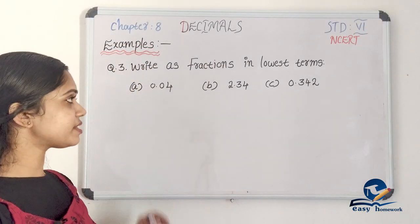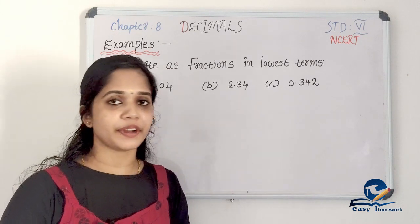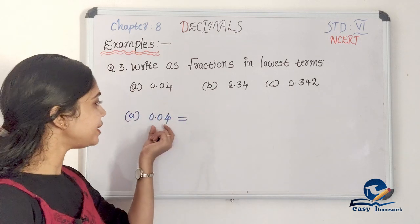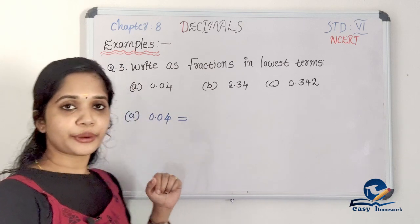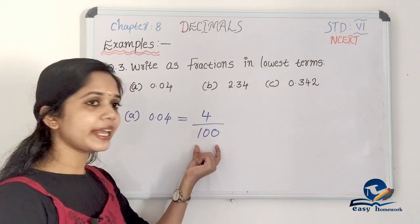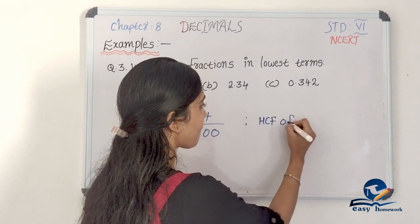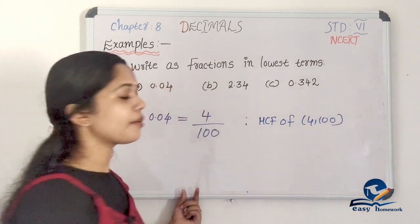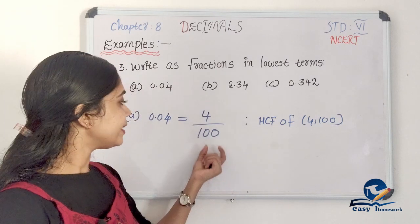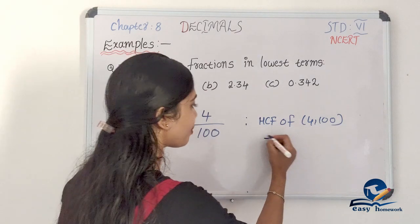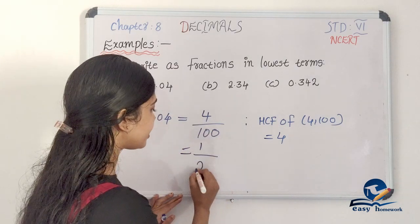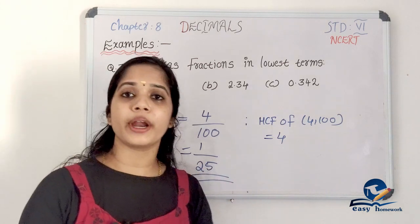Third question: write as fractions in lowest terms. For 0.04 — the decimal point is in the two places, so it is 4 by 100. To find the lowest terms, we look at 4 and 100. The HCF is 4. We divide 4 by 4 to get 1, and 100 by 4 to get 25. So the lowest term is 1 by 25.